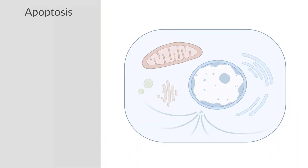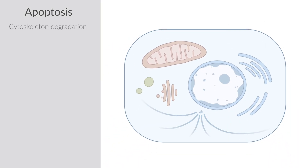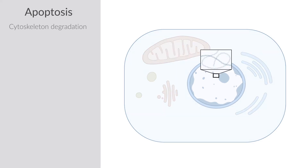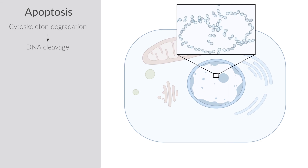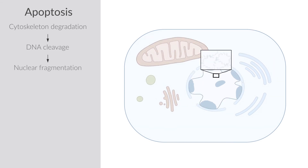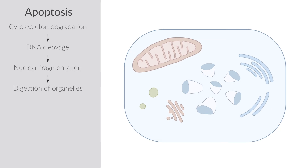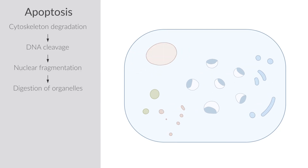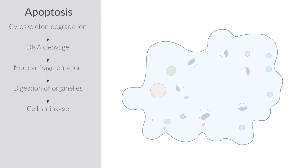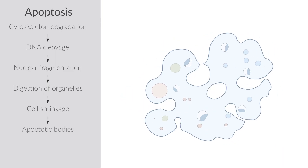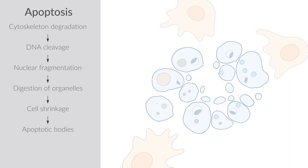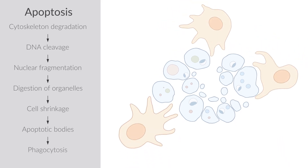Activation of caspases leads to the degradation of the cytoskeleton and triggers nuclear enzymes called endonucleases. Endonucleases cleave the DNA, resulting in nuclear fragmentation. In addition to DNA, other cell organelles are also digested by caspases. The cell starts to shrink and separates into smaller fragments termed apoptotic bodies. Apoptotic bodies are phagocytosed by macrophages and further degraded.